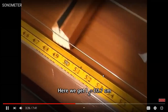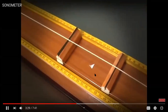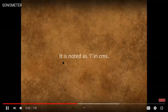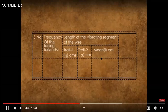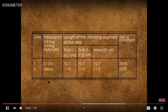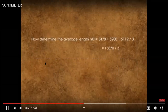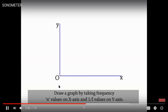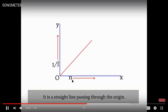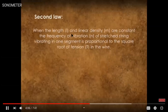You measure L, the distance between both bridges, and repeat the experiment with different tuning forks to get average values. Then you plot a graph of N (frequency) versus 1/L, which gives you a straight line, verifying the first law.